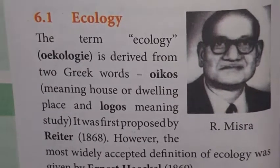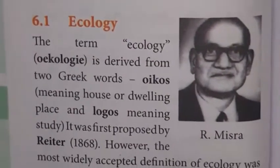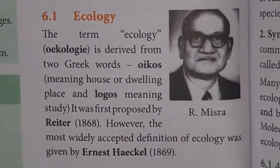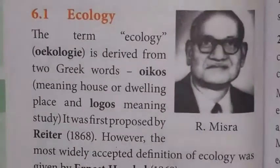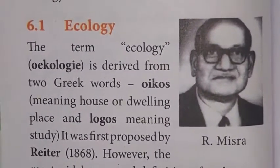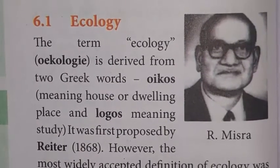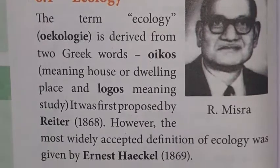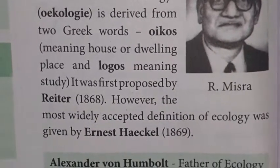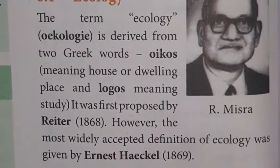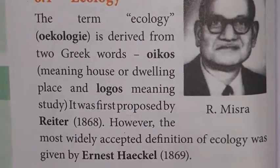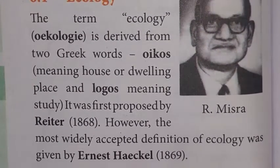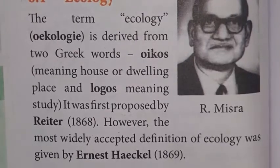The term ecology is derived from two Greek words: 'oikos,' which means house or dwelling place — that is the living place of an organism — and 'logos,' which means study. It was first proposed by Reiter in the year 1868.